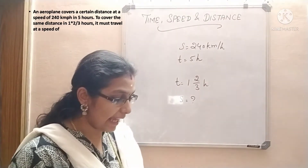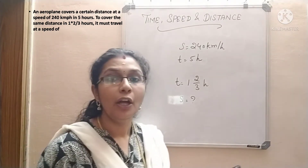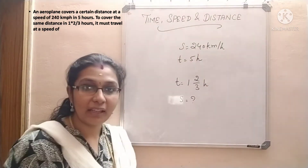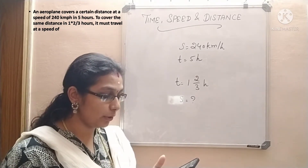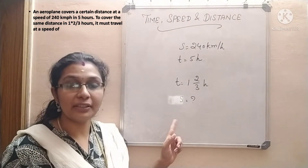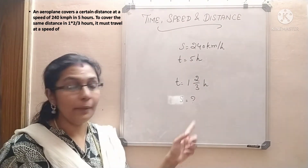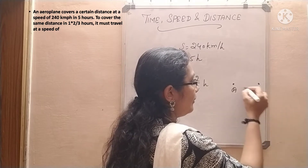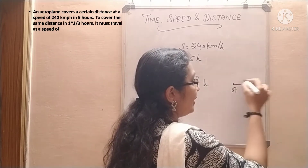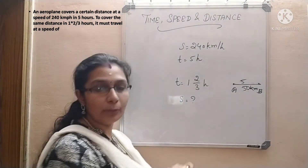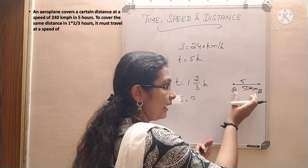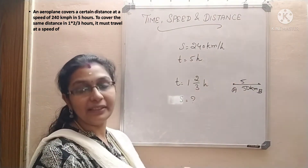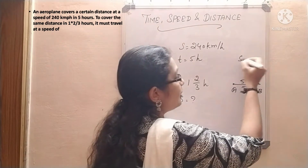Next question. An aeroplane covers a certain distance at a speed of 240 kilometer per hour in 5 hours. To cover the same distance in 1⅔ hours, it must travel at a speed of? They are asking for speed, and the aeroplane covers the same distance but now in 1⅔ hours. Consider two points A and B. It takes 5 hours to cover that distance at 240 km/h. The same distance is now covered in 1⅔ hours. What is the speed? Distance is the same.